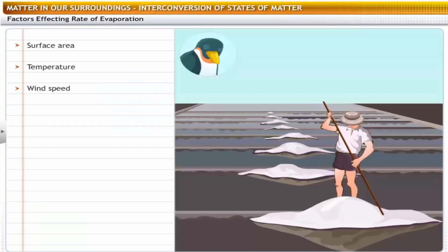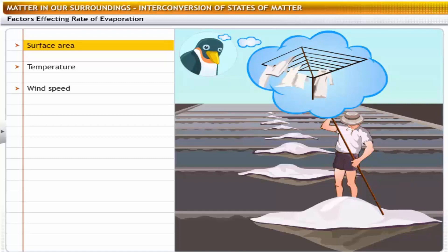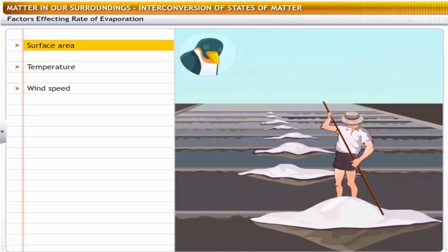Shallow quarries or pans are built near the sea. The shallow pans provide a relatively large surface area for water to evaporate quickly, much like the clothes that you spread out on a clothesline so they dry faster. Water from these pans evaporates, leaving salt behind. Then the salt is collected and refined before use. So, the rate of evaporation depends on the surface area.